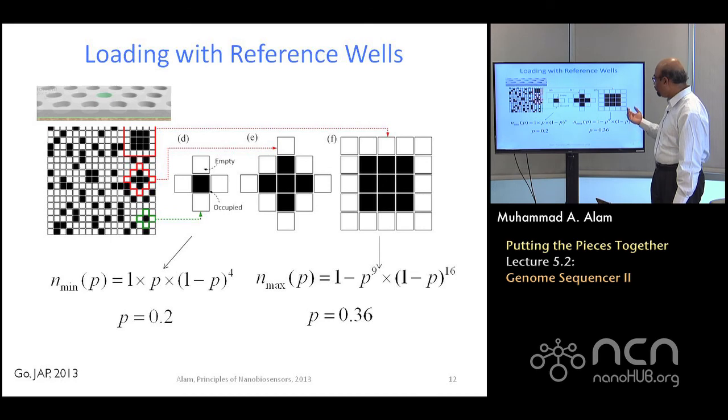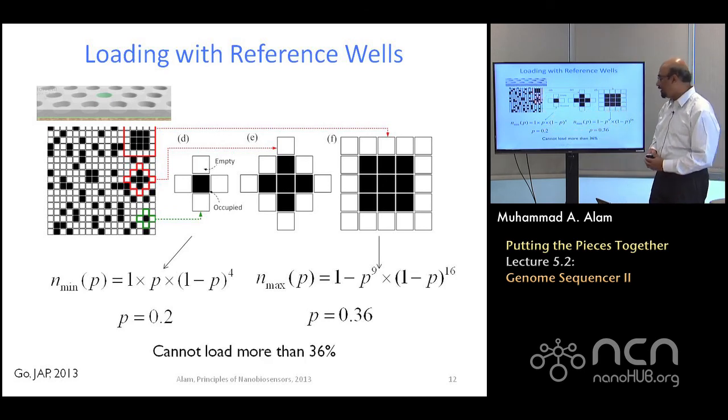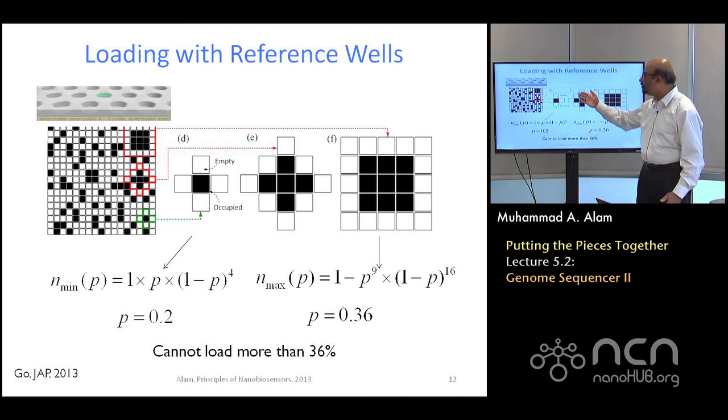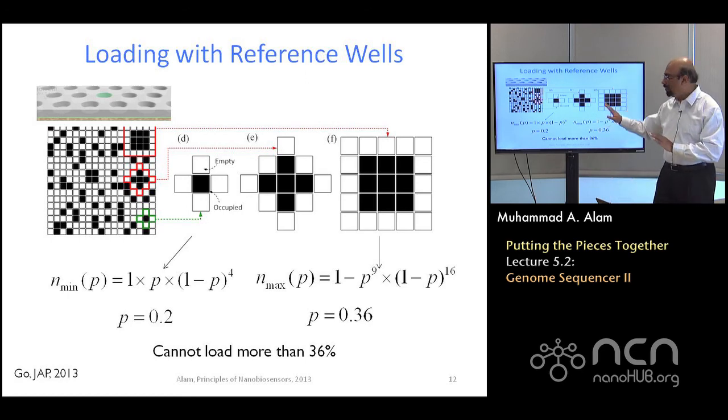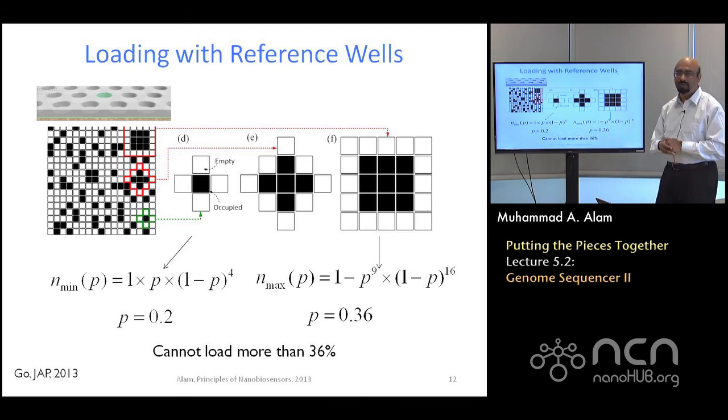And then, if you want to avoid this situation, then you subtract from one, and that tells you the maximum that you can have, maximum loading you can have is only 36%. So, what this says, that you cannot have more than a certain fraction of the black, you cannot load more than a certain fraction if you want to have a reference electrode. You see, forget about all the math. If you have to have one loaded well with one reference well, then you can immediately see you cannot have more than 50%, because one to one. And then, all the extra constraints that you have to have for some neighbors open ensures that you have your loading probability, the fraction of black has to be even lower if you want this particular configuration to be viable.